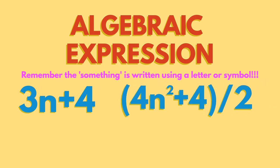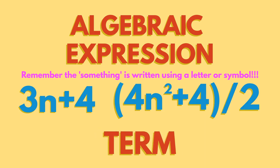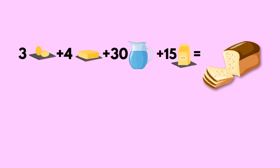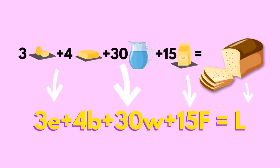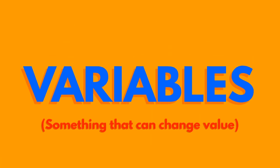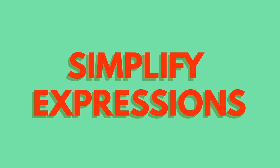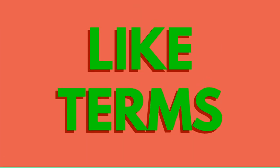it can be written like this. We replace the something with a term, usually a letter or a symbol. They can represent many different values, so they are called variables. To use algebra effectively, we must be able to simplify expressions by collecting the like terms.